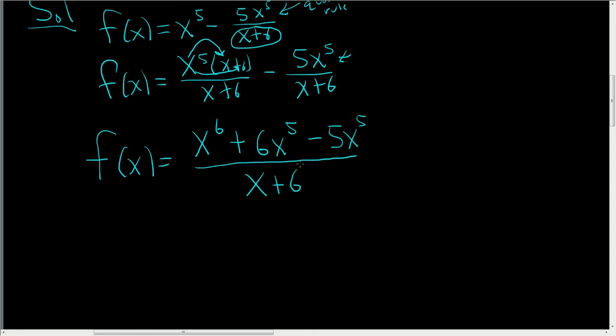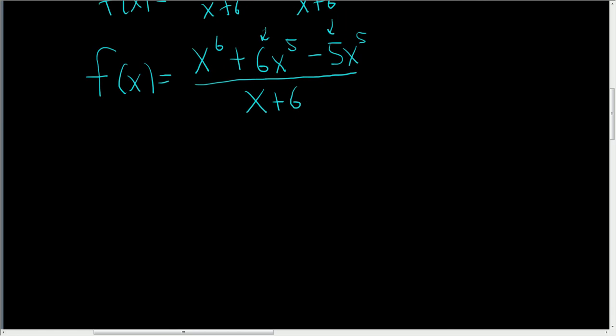We're almost in a position where we can differentiate. Let's just subtract the 6 and the 5, and that'll give us 1. So rewriting f of x, we end up with f of x equals x to the sixth plus x to the fifth over x plus 6.